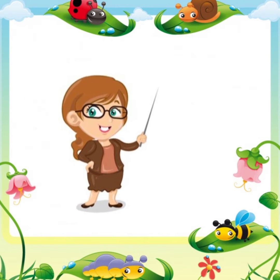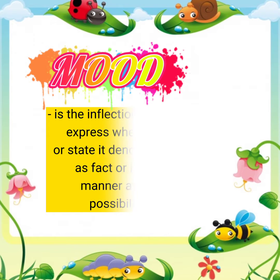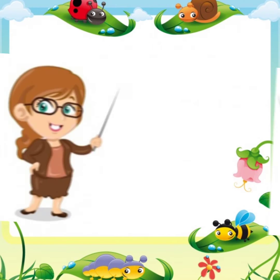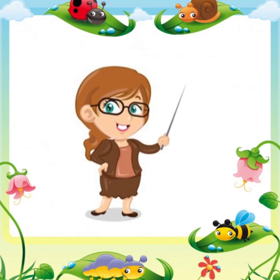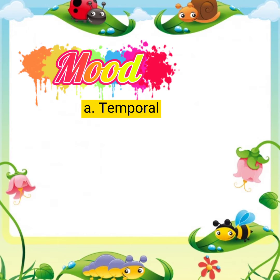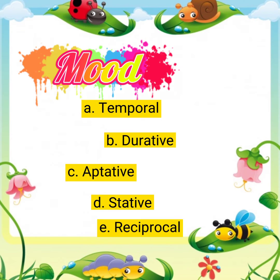The second component of a verb is mood. Mood is the inflected form of a verb to express whether the action or state it denotes is conceived as fact or in some other manner such as command, possibility, or wish. Cebuano verbs may be classified as follows: temporal, durative, aptative, stative, and reciprocal.